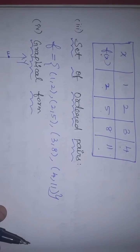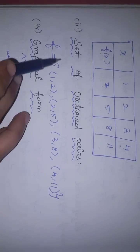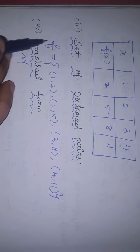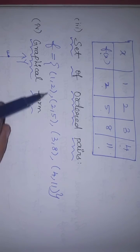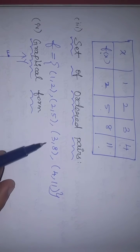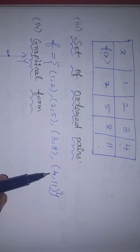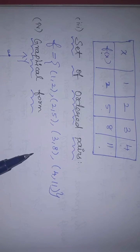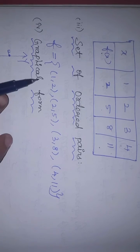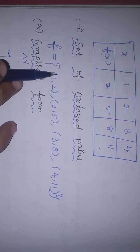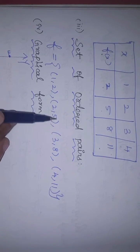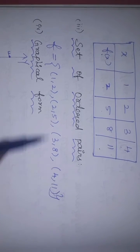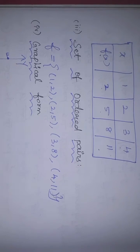Next is the set of ordered pairs. Function f = {(1, 2), (2, 5), (3, 8), (4, 11)}. This is the set of ordered pairs.